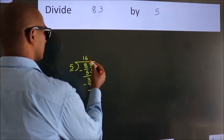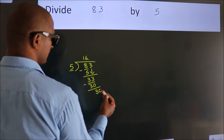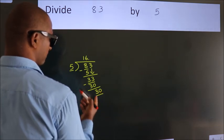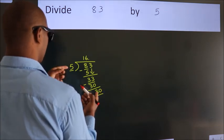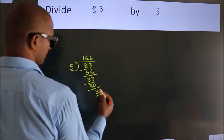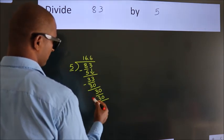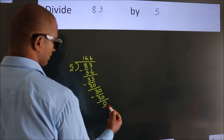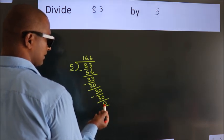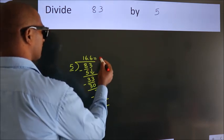So what we do is we put a dot, take 0. So 30. When do we get 30? In 5 table. 5, 6, 30. Now we subtract. We get 0. We got remainder 0. So this is our quotient.